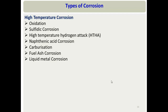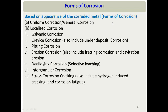Based on the corrosive gas involved, high-temperature corrosion is divided into different types: if the gas is oxygen, it is oxidation corrosion; if sulfur is involved, it is sulfidic corrosion; if hydrogen is involved, it is high-temperature hydrogen attack — and so on. We will discuss all these types, which occur in different refinery units, at length in subsequent lectures.